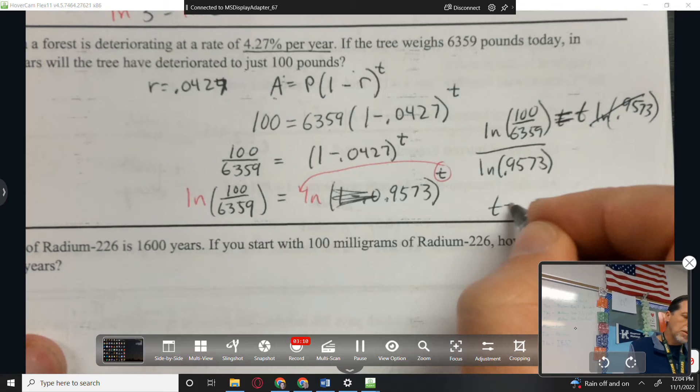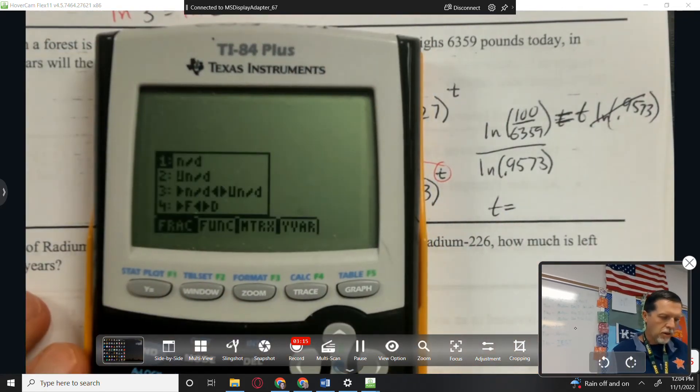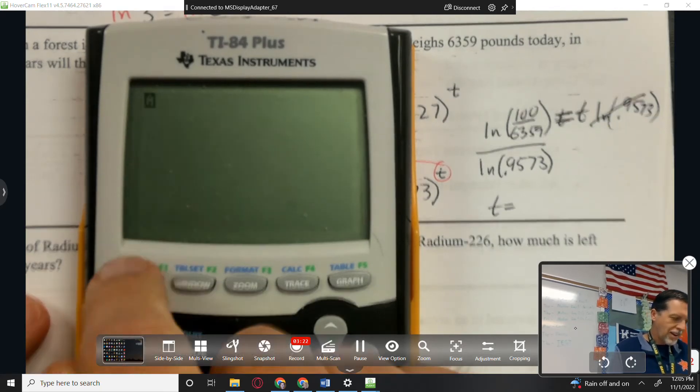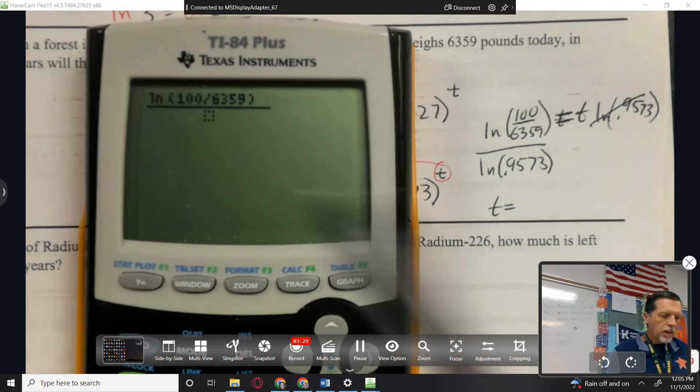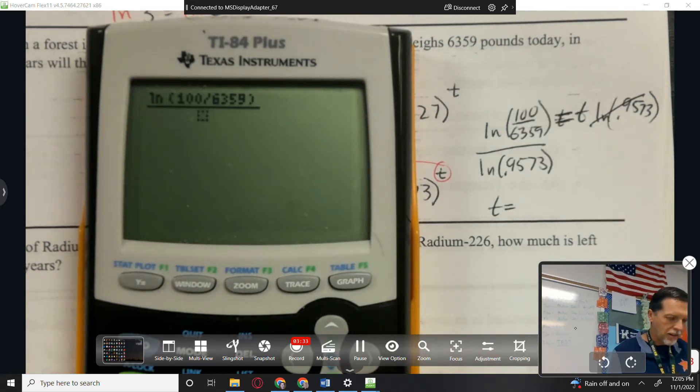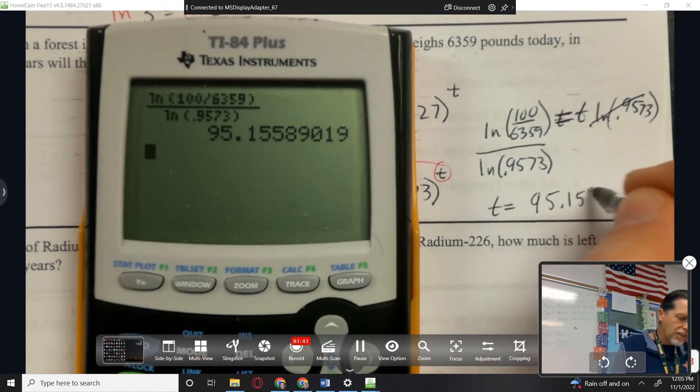And we're almost there. Divide both sides by natural log of 0.9573 to get your time. So this is going to be a mess in the calculator, but that's why you have the fraction bar. Natural log, I do need the fraction bar because I want natural log of 100 over 6359. Could have used the fraction bar there, but that's a simple one, so I'm not going to bother with that. Over natural log 0.9573.